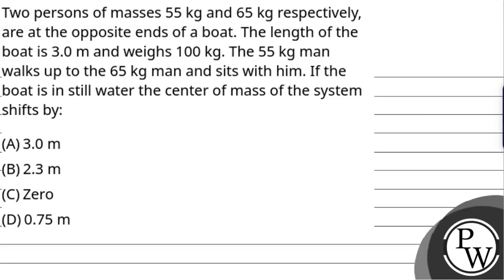Hello everyone, let's hear the question. The question says: two persons of masses 55 kg and 65 kg respectively are at opposite ends of a boat. The length of the boat is 3.0 meters and weighs 100 kg. The 55 kg man walks up to the 65 kg man and sits with him. If the boat is in still water, the center of mass of the system shifts by...